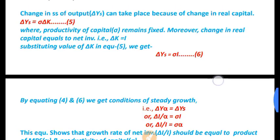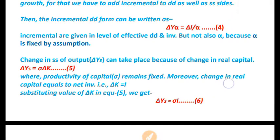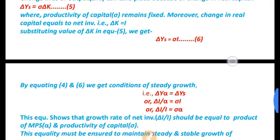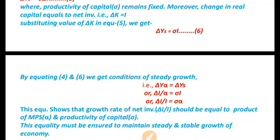Equating the incremental demand side and supply side and transferring I to the left side gives: ΔI/I = σ × α. This equation states that net investment must grow at a rate equal to the product of MPS (α) and the productivity of capital (σ).